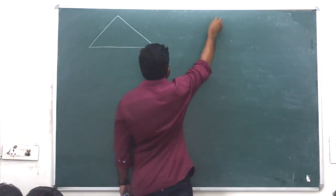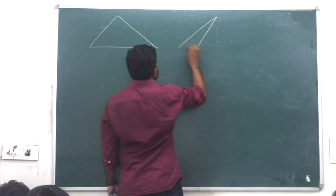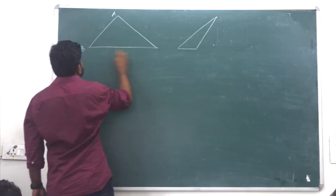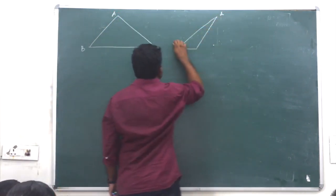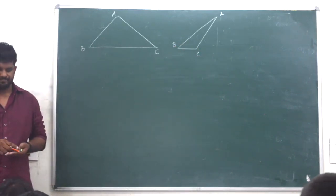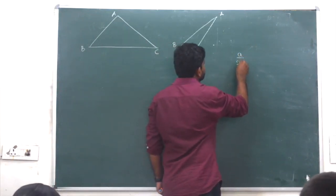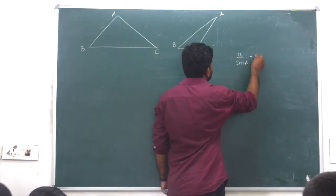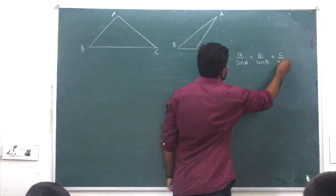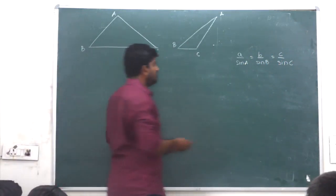We will take two cases, one acute angle and one obtuse angle. Write down the sine rule to prove: a upon sine A equal to b upon sine B equal to c upon sine C equal to some constant k.